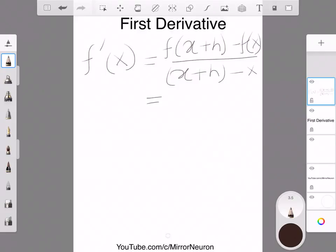And the lower, the denominator now becomes h itself, and the numerator remains the same, f(x+h) minus f(x).